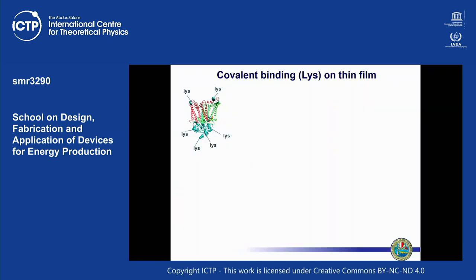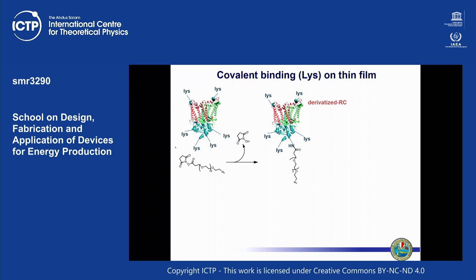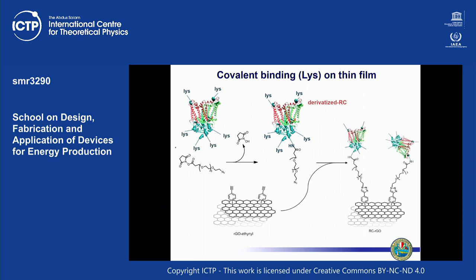We also used a more classical approach: using lysine residues and a bifunctional spacer — one end reacting with lysine, the other bearing an azido group — to do click chemistry with a triple bond attached to graphene oxide flakes. This covalently functionalized the graphene oxide flakes with the enzyme. Although not as elegant as the single-site attachment approach, it was much more effective.